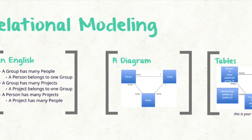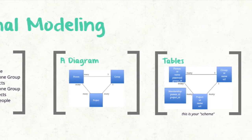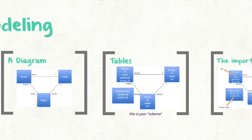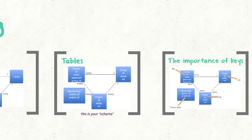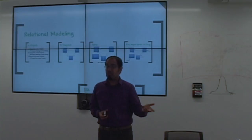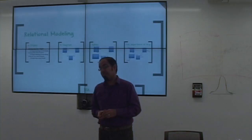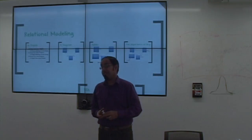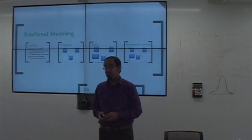For a long time, relational modeling has been the standard way that people store data. There are whole classes and sigma-6 certifications on how to do this modeling correctly. I'm not going to get into that too much, but it's important to be able to do this type of modeling because, even though non-relational databases are really popular right now, if your problem really is a relational problem, it may make sense to store it in a relational database.